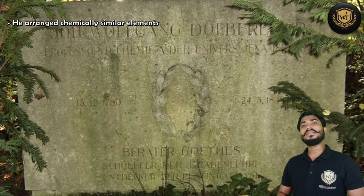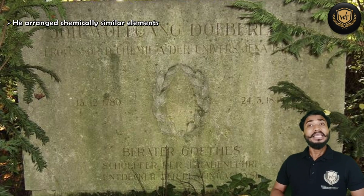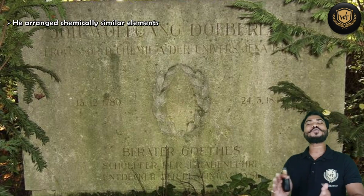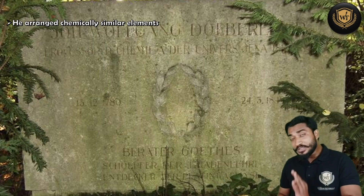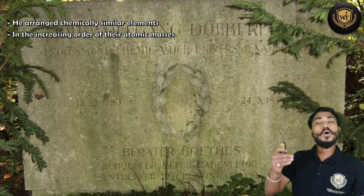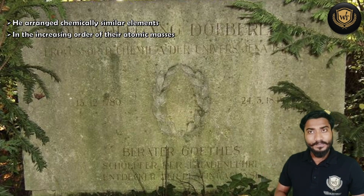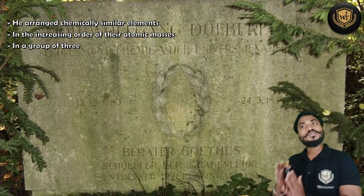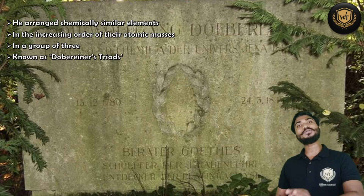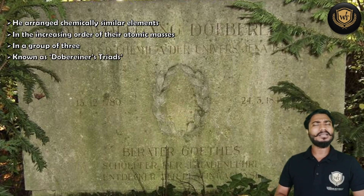At his time there were around 30 elements. What he did was arrange all those chemically similar elements — chemically similar meaning their chemical properties are similar to each other. They were arranged in increasing order of their atomic masses, and that was done in a group of three. Since it was a group of three, it was famously called Dobereiner's Triad.